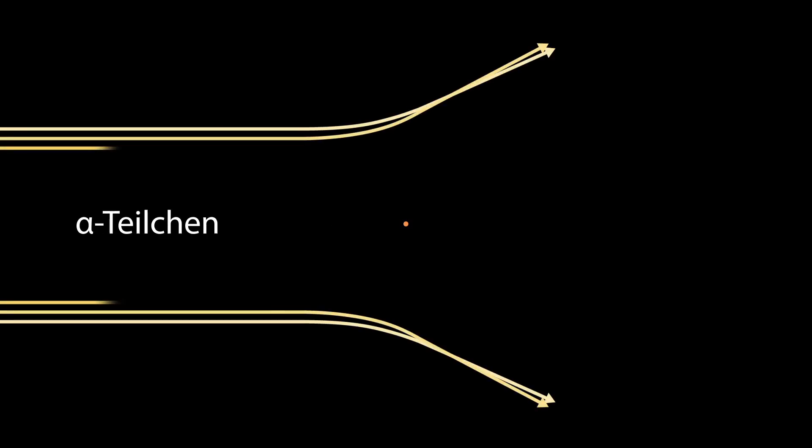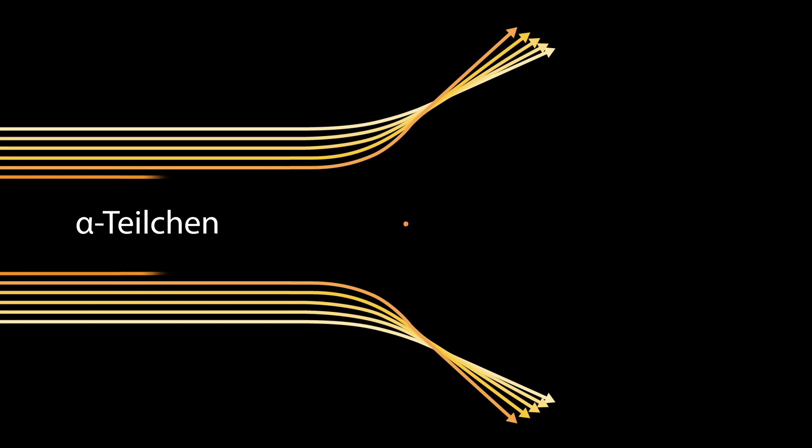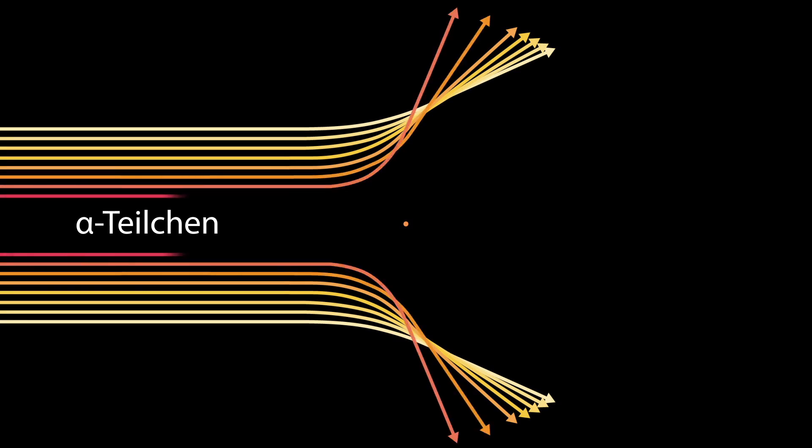Deflected particles with positive charge follow hyperbolic paths. Those paths are more sharply curved when the alpha particles are nearer to the nucleus.